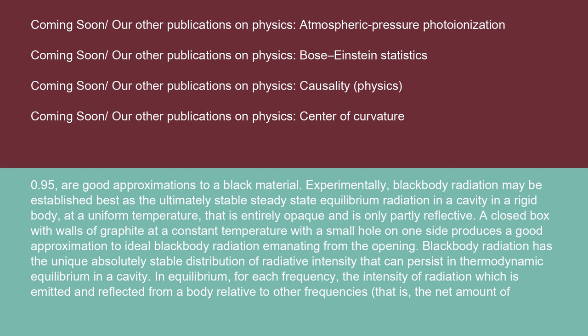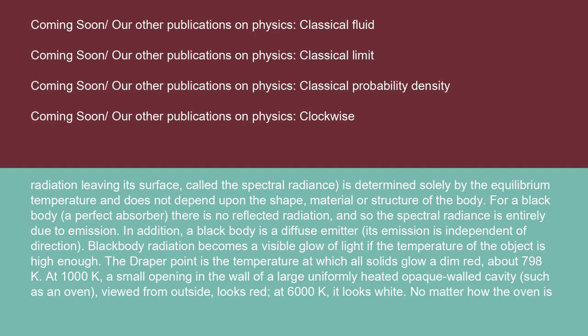Black body radiation has the unique, absolutely stable distribution of radiative intensity that can persist in thermodynamic equilibrium in a cavity. In equilibrium, for each frequency, the intensity of radiation emitted and reflected from a body — that is, the net amount of radiation leaving its surface, called the spectral radiance — is determined solely by the equilibrium temperature and does not depend upon the shape, material, or structure of the body. For a black body, a perfect absorber, there is no reflected radiation, and so the spectral radiance is entirely due to emission.